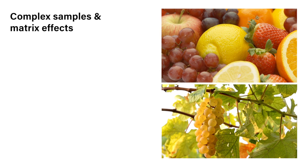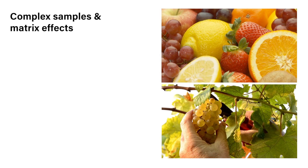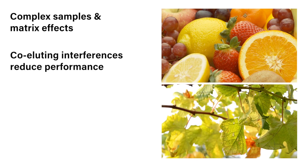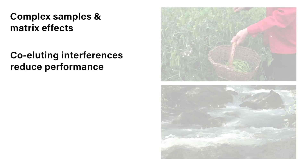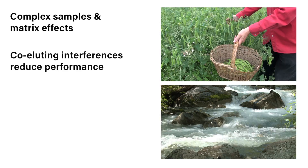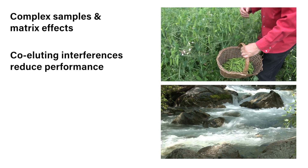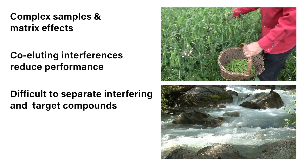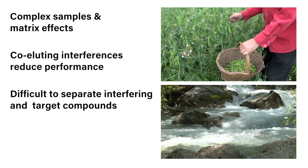The analysis of food and environmental samples presents a number of unique challenges, including the variety and complexity of the samples and sample matrix effects. Uncertainty in chromatographic method development and quantitative experiments can arise when unknown co-eluting interferences reduce performance. It is often impossible to separate all interfering compounds from target analytes.